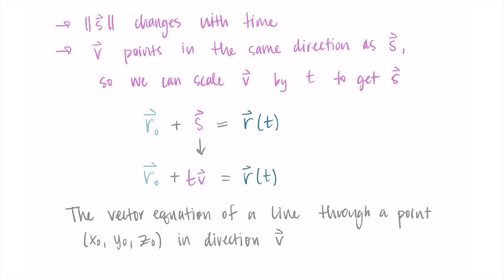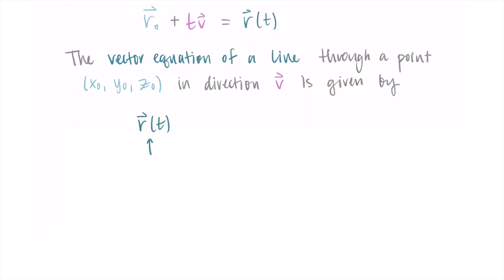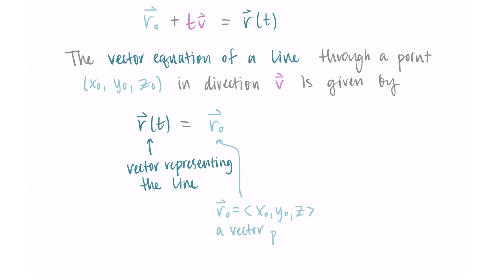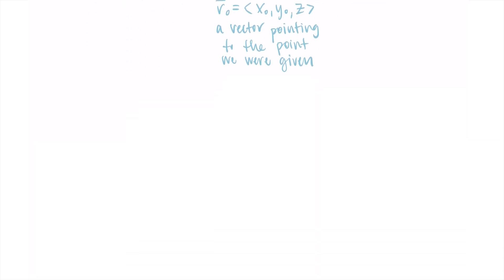Let me rewrite this more formally. The vector equation of a line through the point x₀, y₀, z₀ in the direction v is: r(t) = r₀ + t·v, where r₀ is a vector pointing to the given point and t·v gives us the direction. It's almost like r₀ gets us to the place we want, and then t times vector v gives us the direction. This is the vector form of the equation of a line.